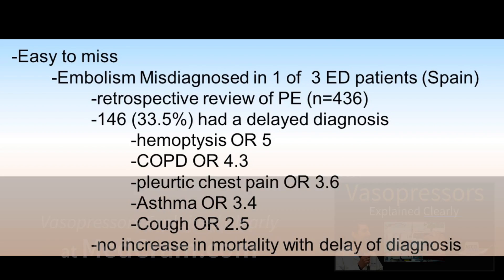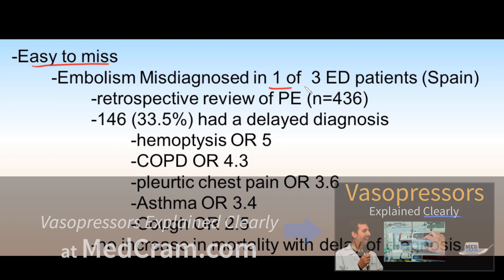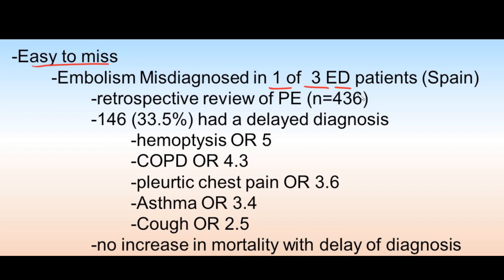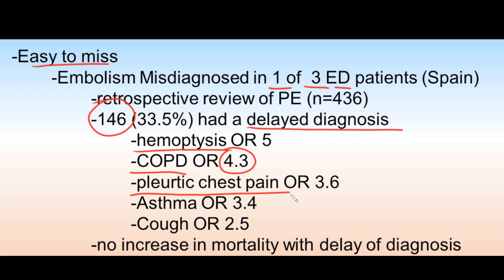One thing to realize about diagnosis is that it's easy to miss. A Spanish study showed it was misdiagnosed in one of three ED patients, and a retrospective review of over 400 patients found 146 had a delayed diagnosis. Things that increased the risk of delayed diagnosis include hemoptysis, COPD — don't be fooled if a patient has COPD — pleuritic chest pain, which increases risk by 3.6, asthma, and cough. Notably, there was no statistically significant increase in mortality associated with that delay.